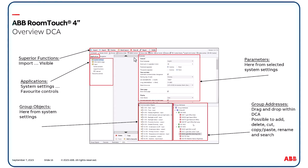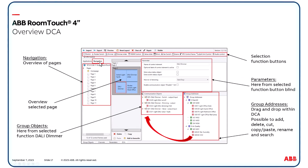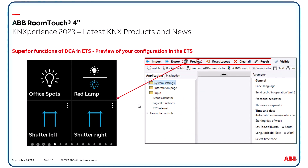Let's have a look at the DCA in the ETS. On top are some superior functions. Under Applications you find system settings and more. Depending on the selection in the applications area, parameters are shown, as well as related group objects and the group addresses of the project. The navigation area allows you to create pages with one, two or four control elements. The function buttons are selected from the top via drag and drop to be adjusted in the parameter window. Group addresses are assigned via drag and drop as well. The final download can be done directly from the ETS. Optionally, a file can be exported to the SD card, then the download is done on the display itself by inserting the card — download time can be a bit faster in this case. An important superior function is the preview for each page created, so you see exactly how it will look on the real display. Further functions behind the subpage, accessible by tapping on the three dots, can be seen and operated as well.